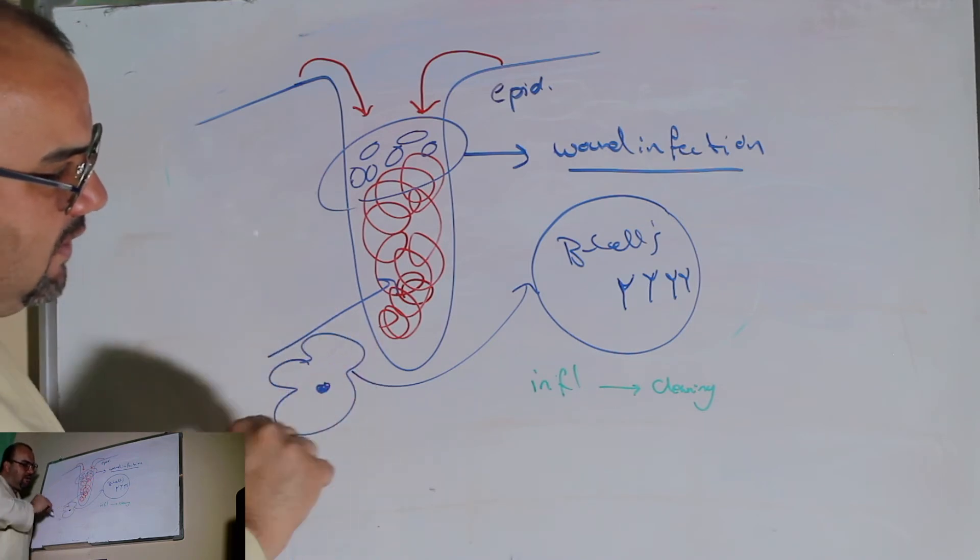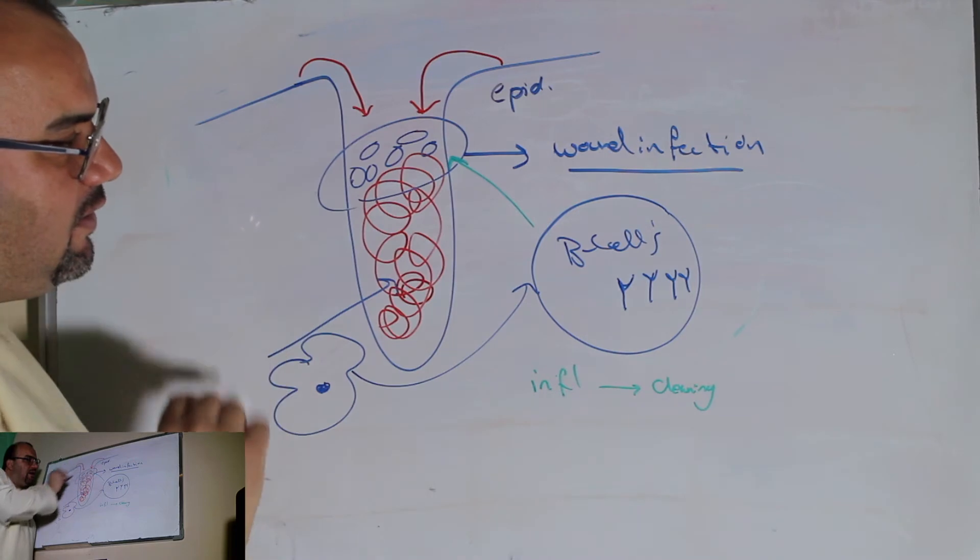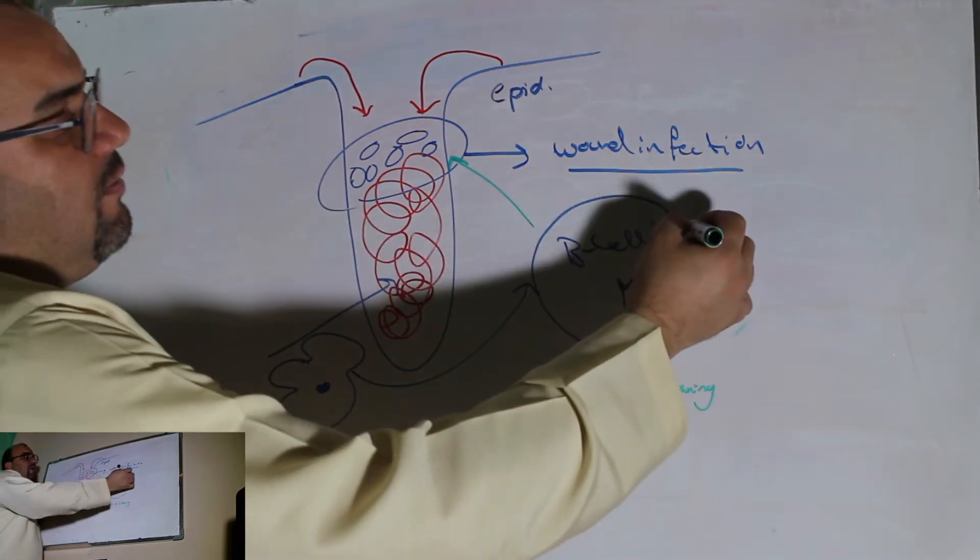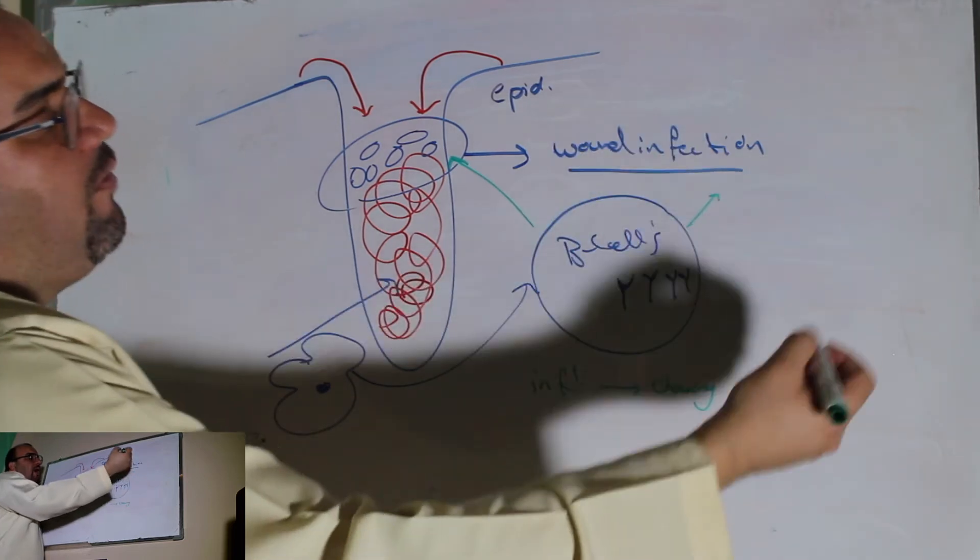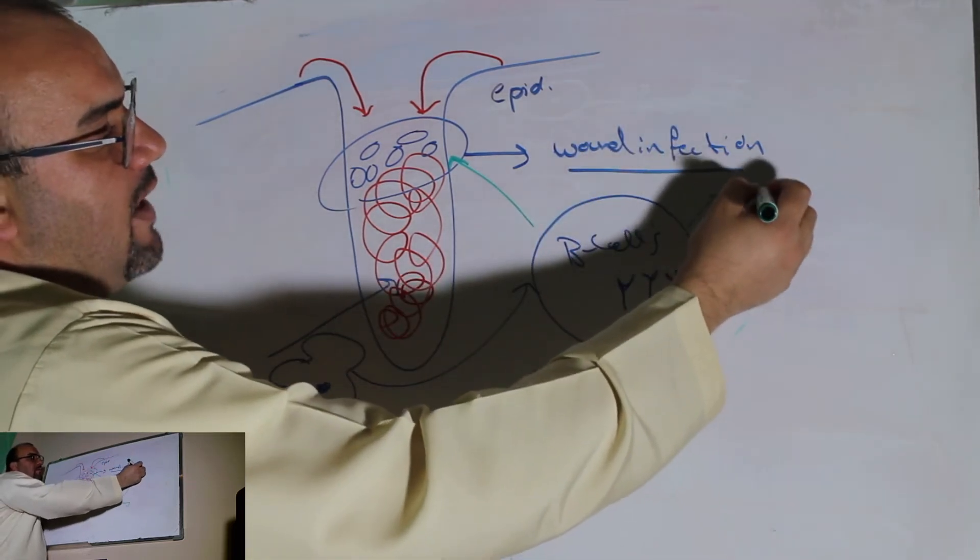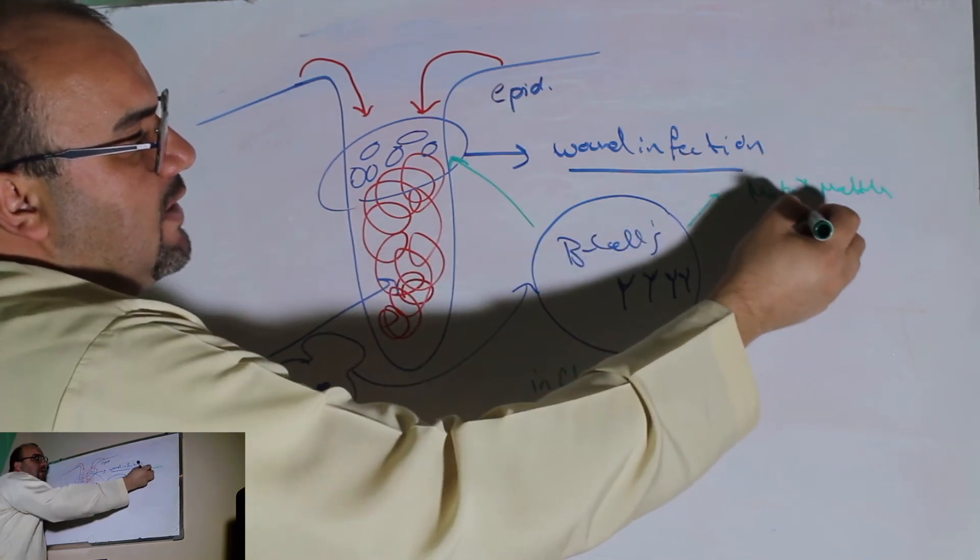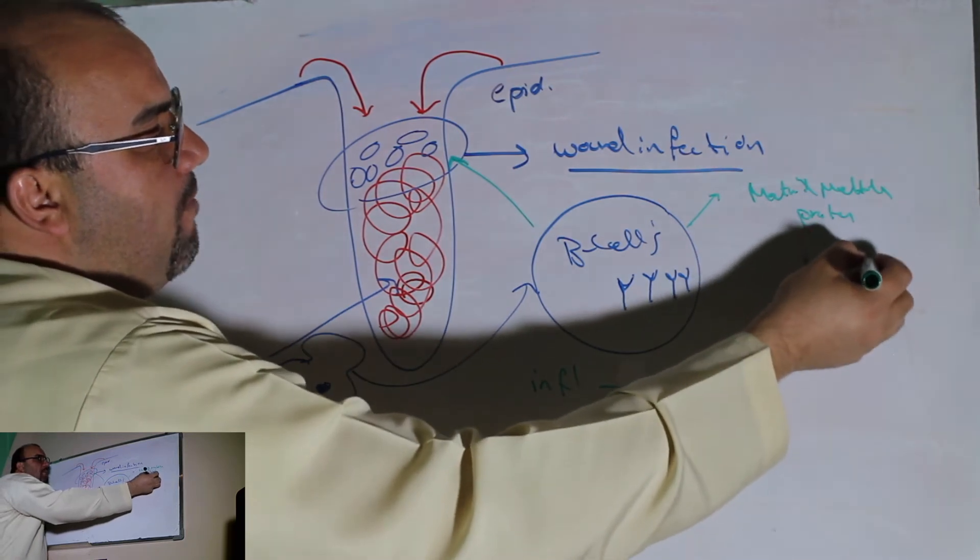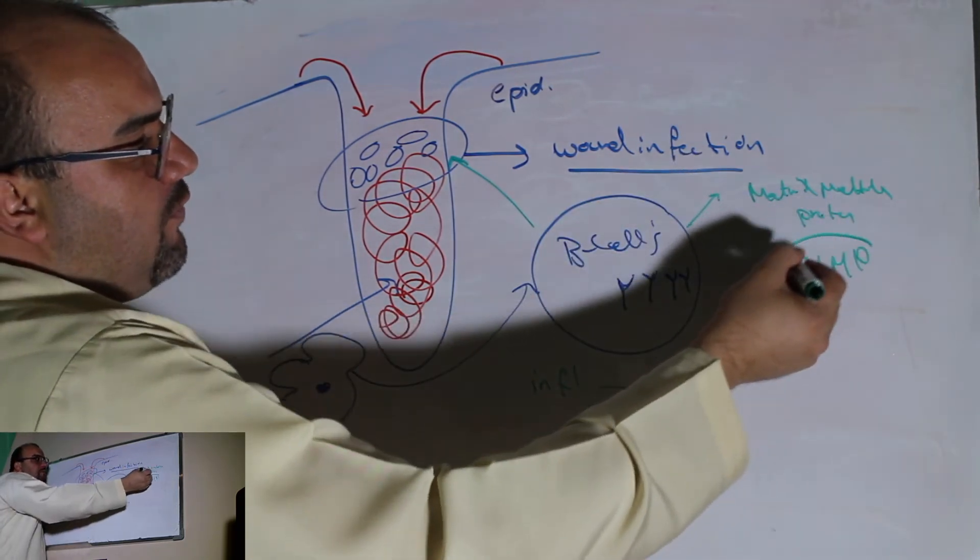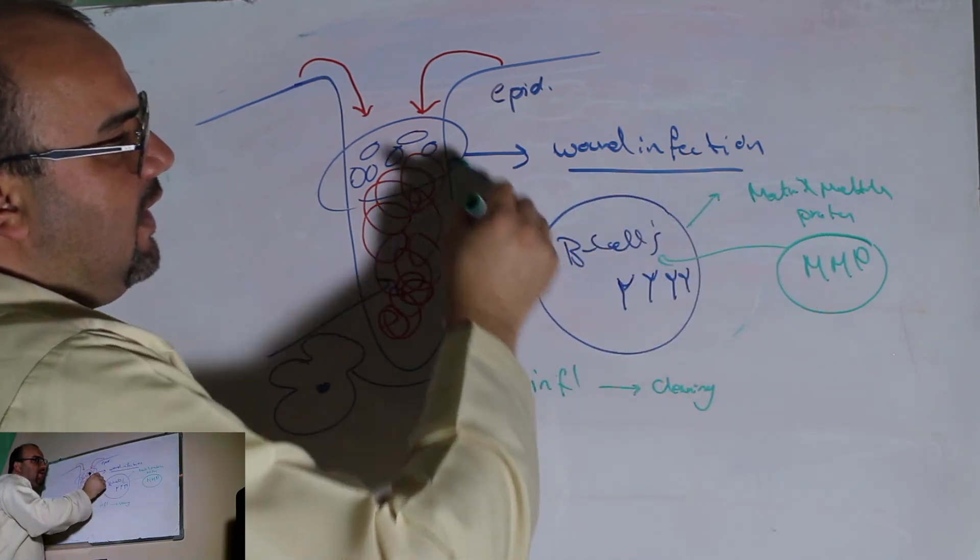Those white blood cells would like to reduce this amount of bacteria here. And this will stimulate making a type of enzyme called matrix metalloproteases, which is known as MMP. The purpose of MMP is supporting the white blood cells in destroying the bacteria.